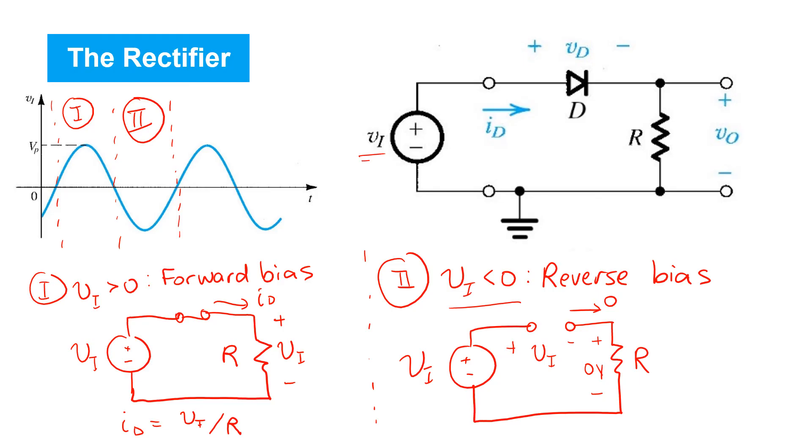So hence, whenever we are in case one, the output voltage vo will follow the input voltage vi precisely. Here again, we are in case one, because vi is greater than zero.